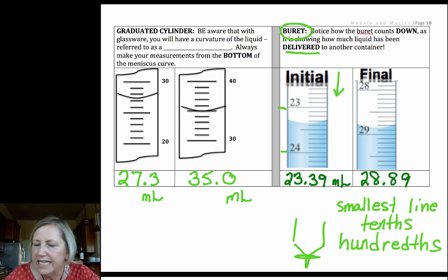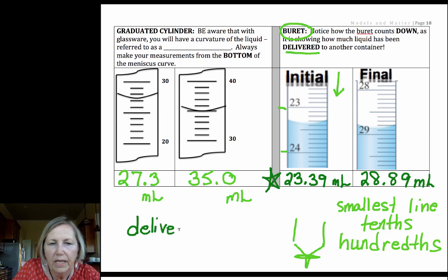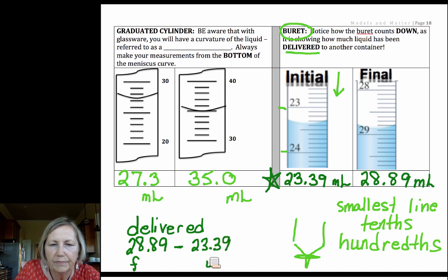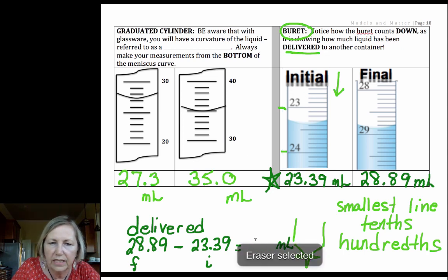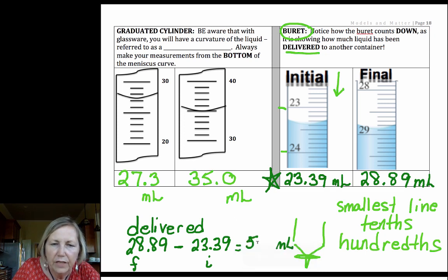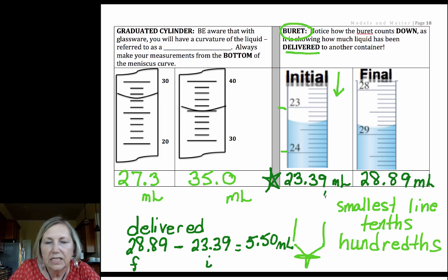Now, what is common is to determine what was delivered. This is your raw data. You must show this data in your data tables. The amount delivered out of the bottom of the burett, it started here and we drained it till it got to here, is always your final 28.89 minus your initial 23.39. And I get 5.50 milliliters were delivered. Remember, this went to the hundredths place. So my answer needs to go to the hundredths place.